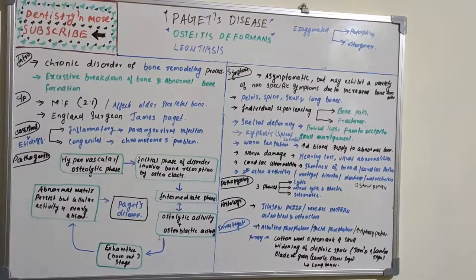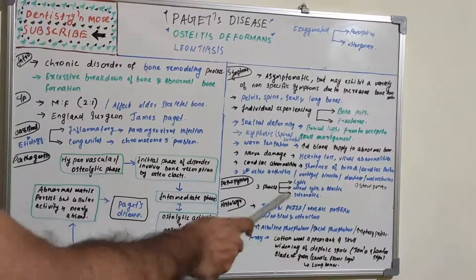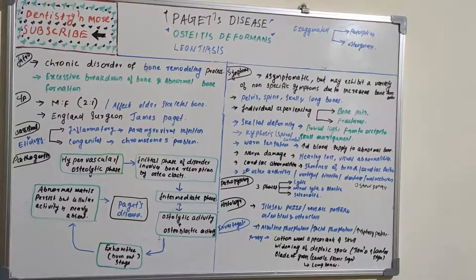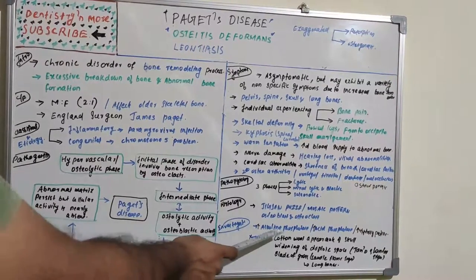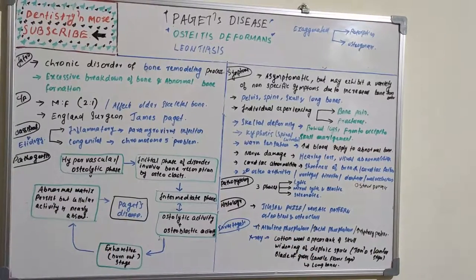In histology, Paget's disease gives a jigsaw puzzle or mosaic pattern, which is a unique feature. Both osteoblasts and osteoclasts are seen in the section. In investigations, there will be increased alkaline phosphatase, increased acid phosphatase, and increased hydroxyproline.